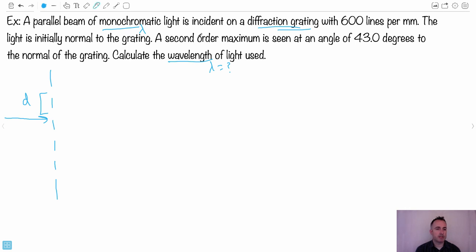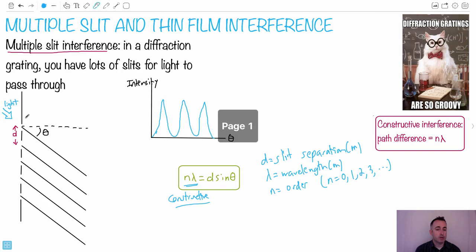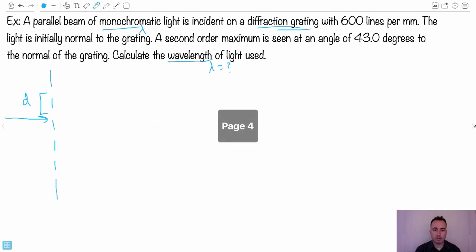And second order maximum is seen at an angle of this much to the normal. So what this means then is we have a second order maximum, which in this case, let's look at the equation first. This equation here, n lambda equals D sine theta. We're going to need that. Okay, so n lambda equals D sine theta. Try to remember that. Here we go. We'll use n lambda equals D sine theta. n then will be, if it's second order, that means n equals 2.